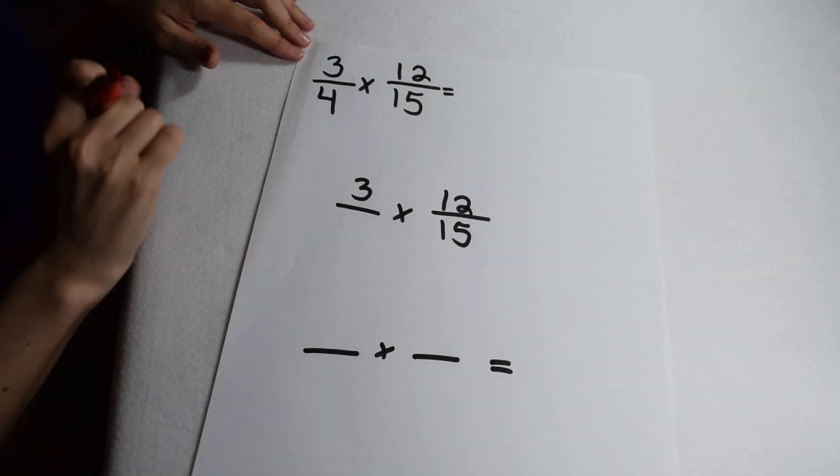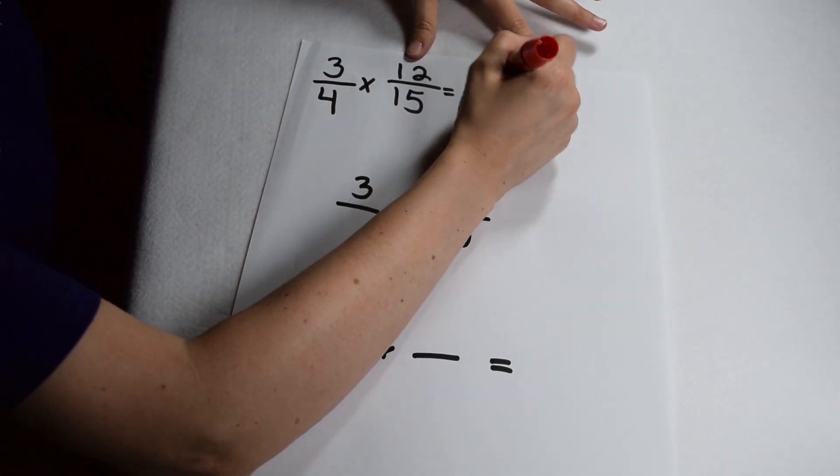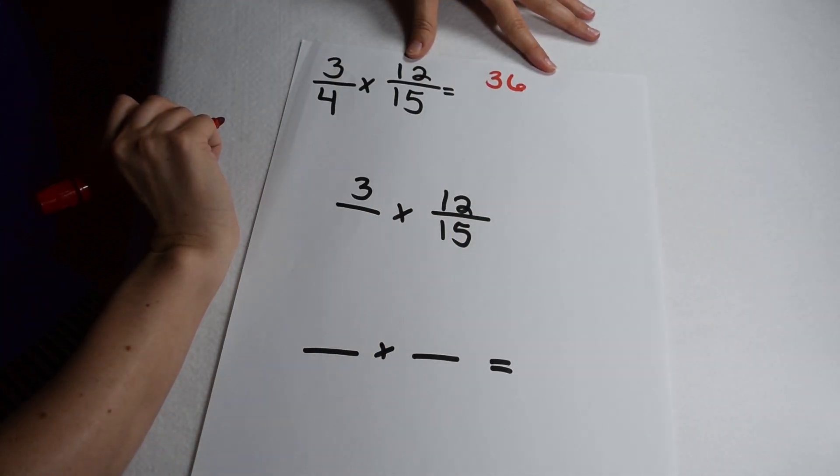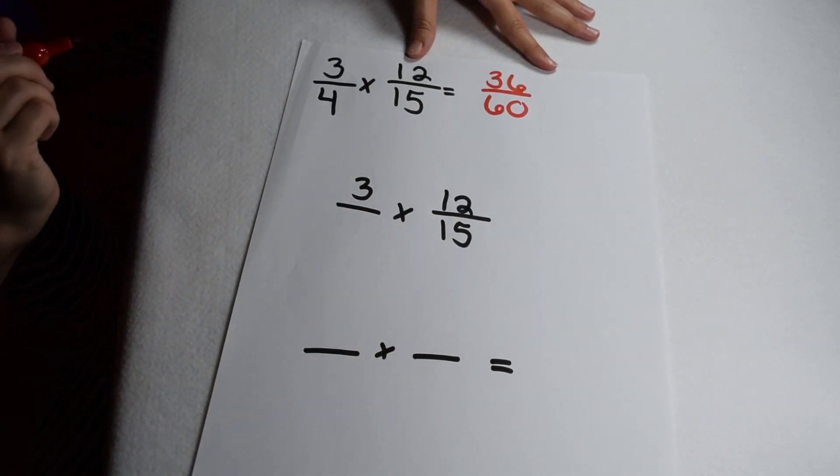Let's start by multiplying 3 fourths by 12 fifteenths the way we always do. When I multiply my numerators together, 3 times 12 is going to give me 36. And when I multiply my denominators together, 4 times 15 is going to give me 60.